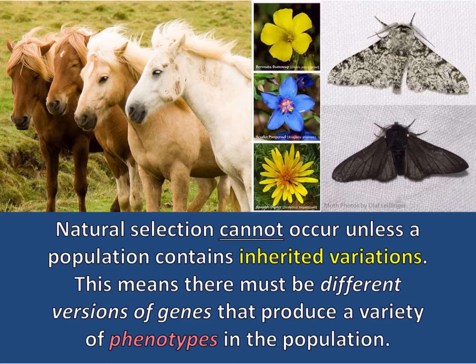The process of natural selection occurs when organisms with the best adaptations survive to produce offspring. Natural selection cannot occur unless a population contains inherited variations.